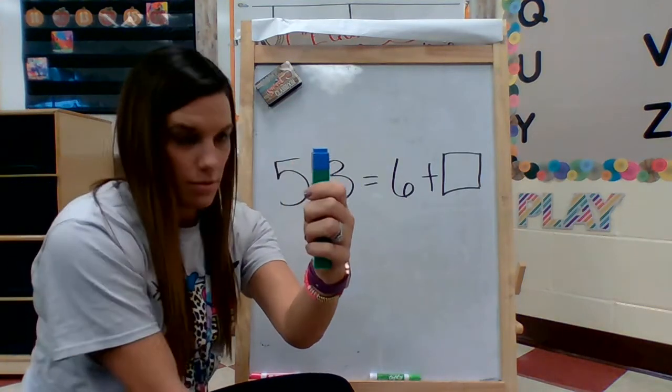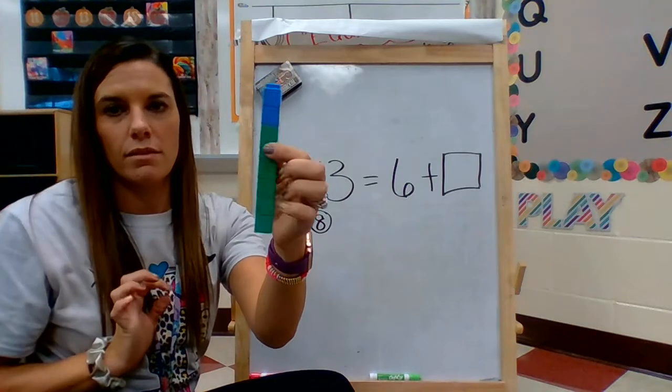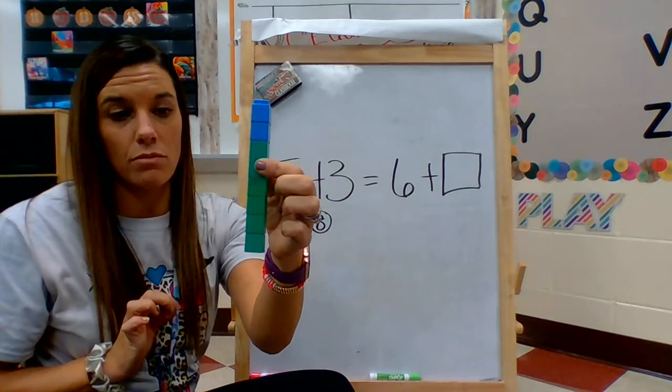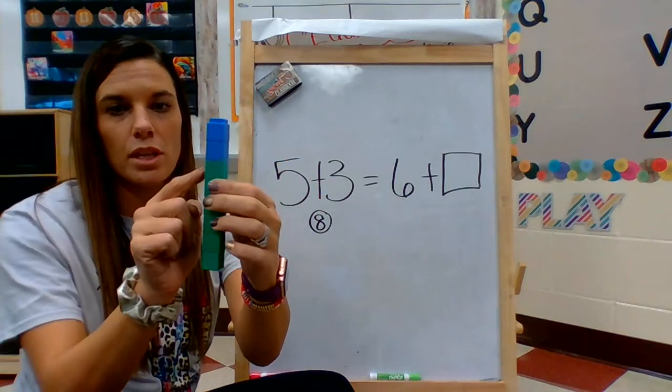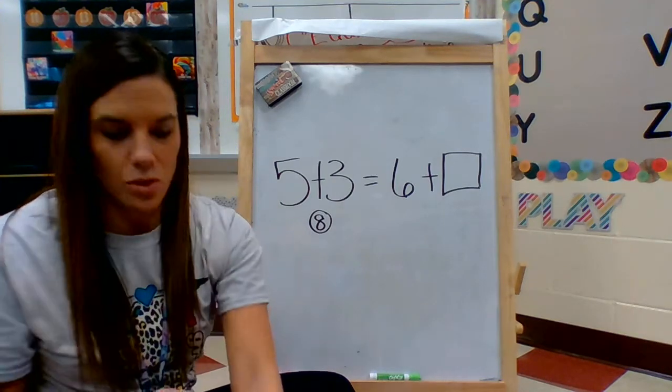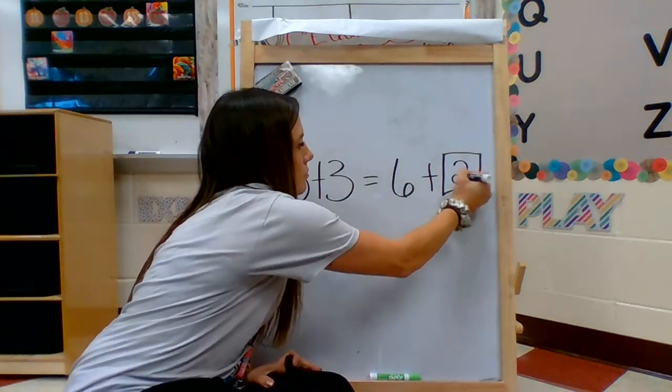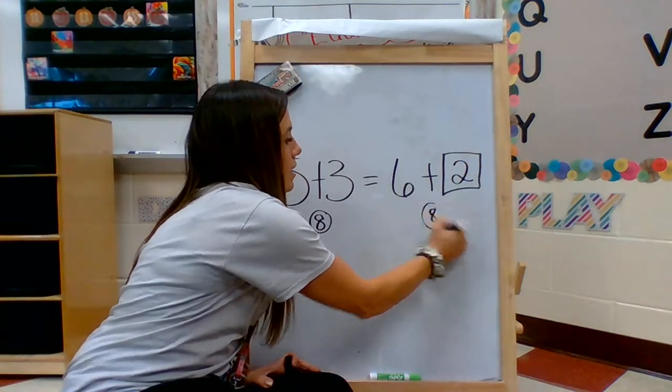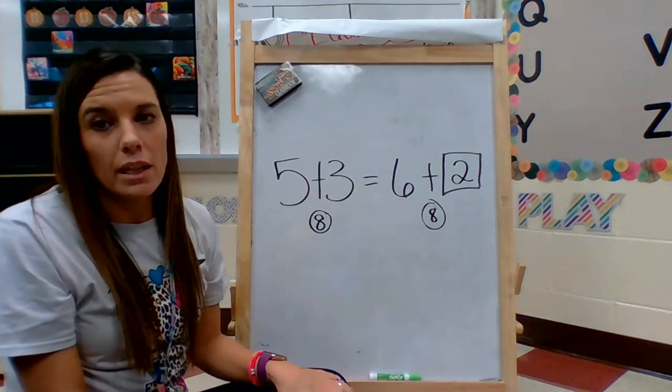6, 7, 8. We got to 8, right? So we have 6 green cubes. And how many blue cubes do we have? 1, 2. So that is our answer, and we just made these equations equal.